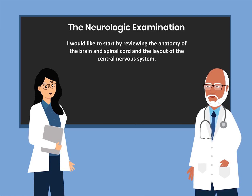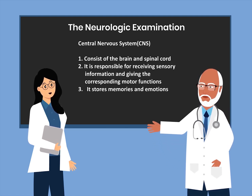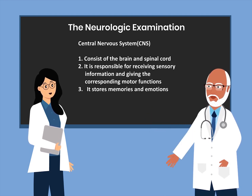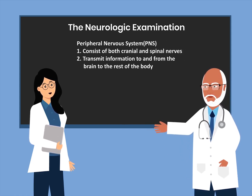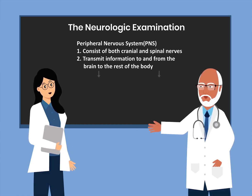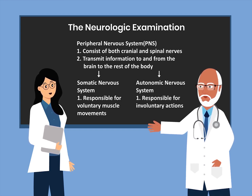I'd like to start by reviewing the anatomy of the brain and spinal cord and the layout of the central nervous system. The central nervous system consists of the brain and the spinal cord. It is responsible for receiving sensory information and giving the corresponding motor functions. It stores memories and emotions. The peripheral nervous system consists of both cranial nerves and spinal nerves. It transmits information to and from the brain to the rest of the body. The peripheral nervous system can be divided into the somatic nervous system, which is responsible for voluntary muscle movements,